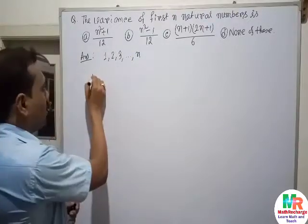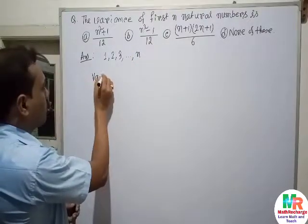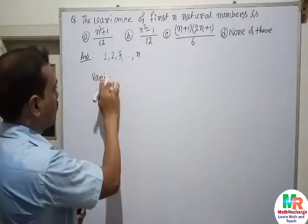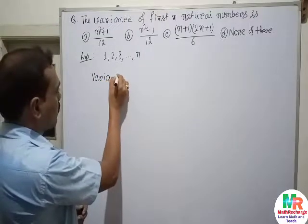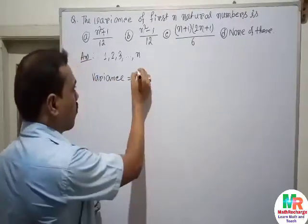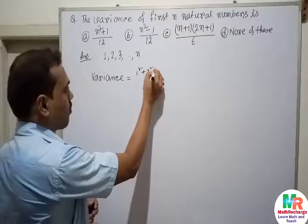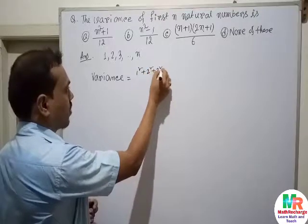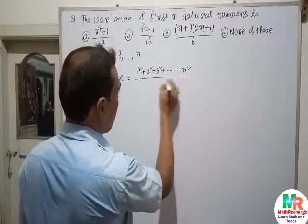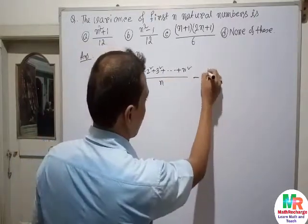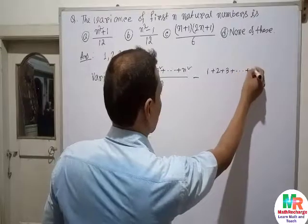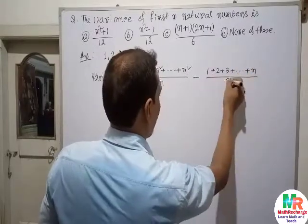Then variance equals (1² + 2² + 3² + ... + n²) / n minus [(1 + 2 + 3 + ... + n) / n] squared.